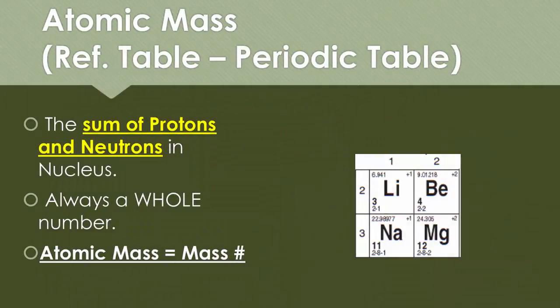The sum of protons and neutrons in every nucleus is the atomic mass. It always has a whole number, and the atomic mass is equal to the mass number. It's in the upper left hand corner on the periodic table. And since they are always whole numbers, you'll notice that lithium, though it has a 6.941 atomic mass, will actually be rated as a 7.